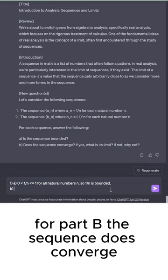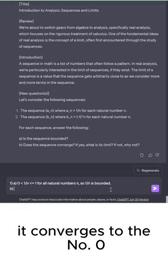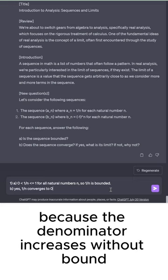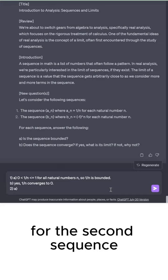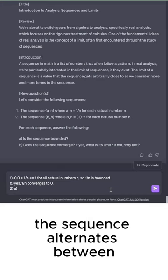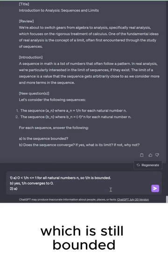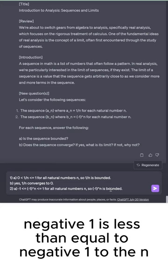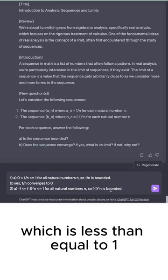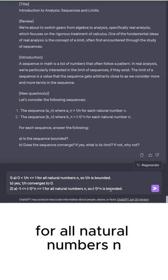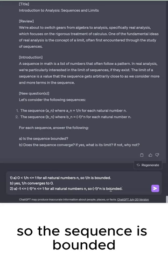For part B, the sequence does converge. It converges to the number 0 because the denominator increases without bound. For the second sequence, the sequence alternates between positive 1 and negative 1, which is still bounded. Negative 1 is less than or equal to negative 1 to the N, which is less than or equal to 1 for all natural numbers N. So the sequence is bounded.